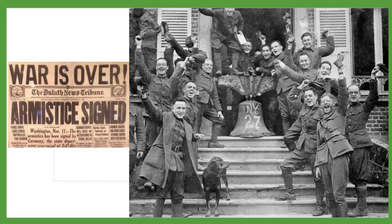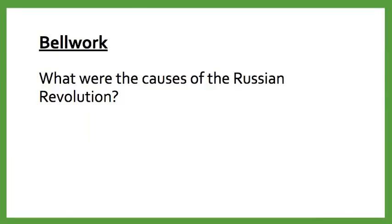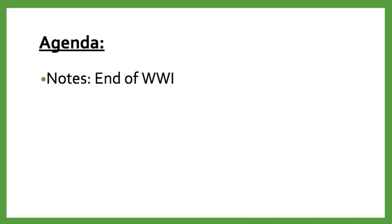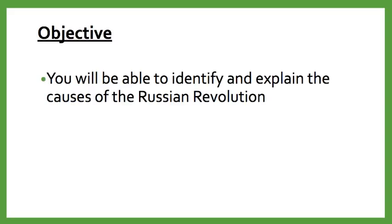For your bell work today, you should be able to identify what were the causes of the Russian Revolution. You don't have to do any of these things, but I always recommend you pause and use this as a self-check. Can I identify the causes of the Russian Revolution, or do I have to look in my notes again? Our AP objective is you'll be able to identify and explain the causes of the Russian Revolution, and also think about what were the end results of World War I and how did governments act in response to all of this.